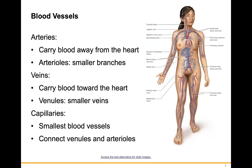Blood vessels include arteries, which carry blood away from the heart, and arterioles, which are the smaller branches. Veins carry blood towards the heart, venules are the smaller veins, and capillaries are at the level of tissues where gas exchange occurs.